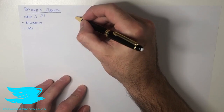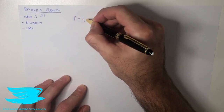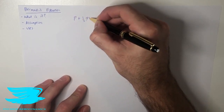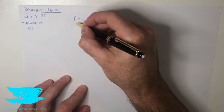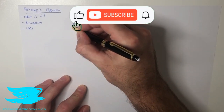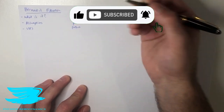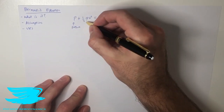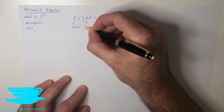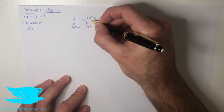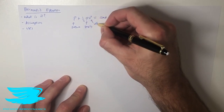Bernoulli's equation is defined as p plus half rho v squared equals constant. So p is pressure — in SI units, pascals — rho is density, and v is velocity.